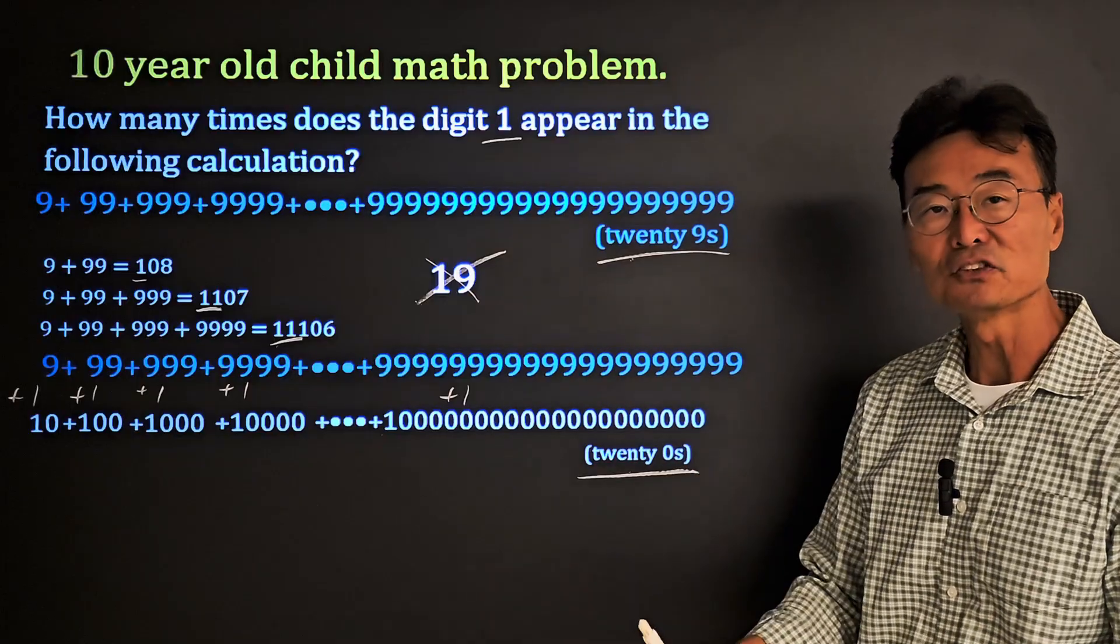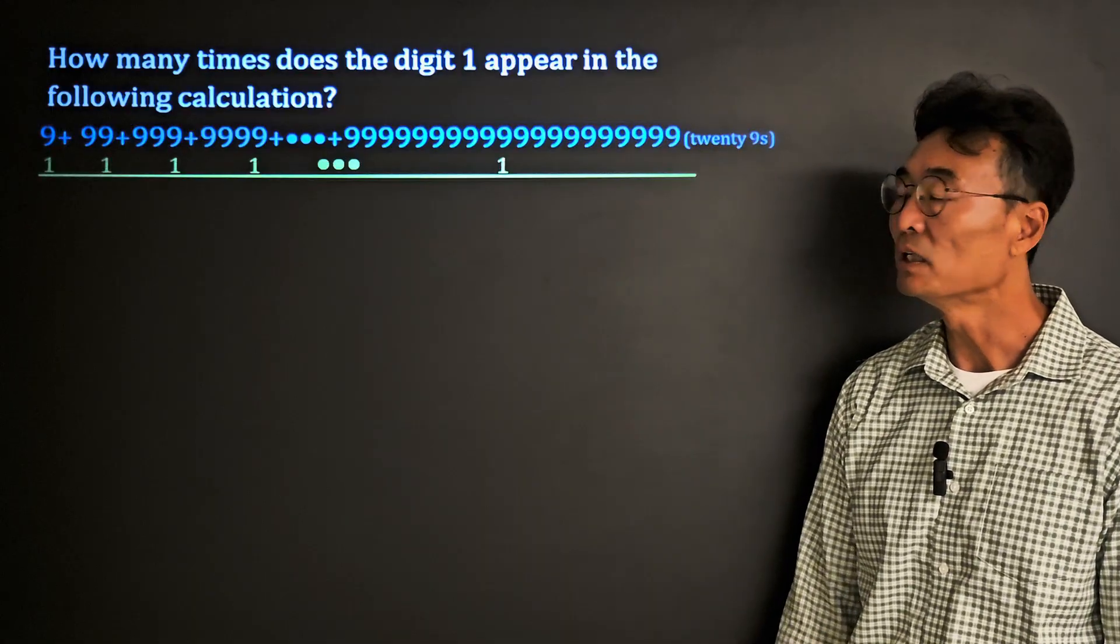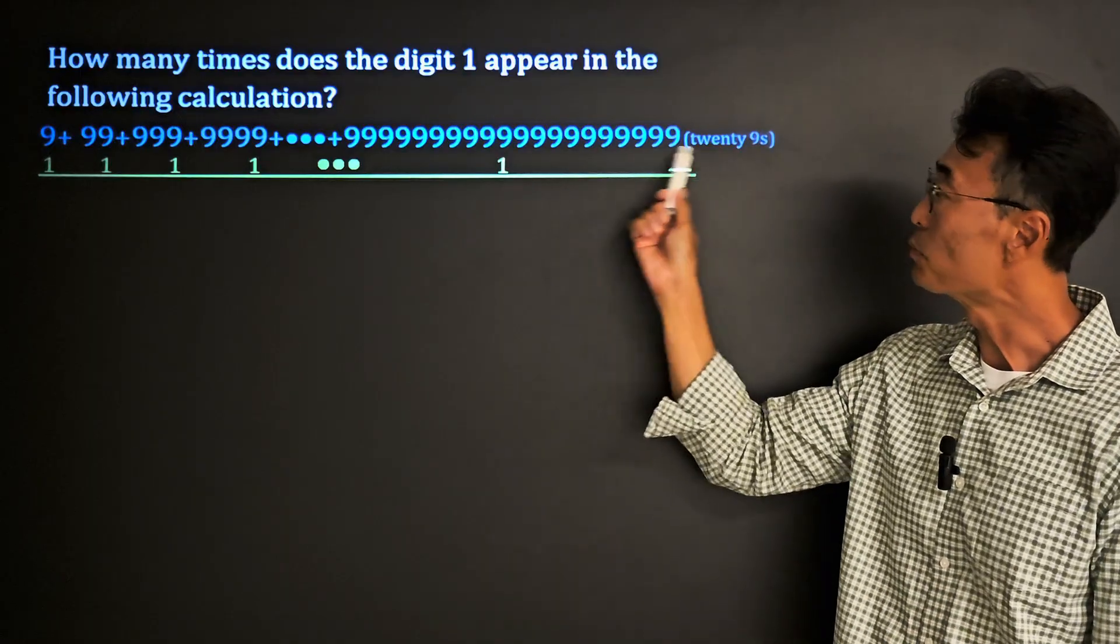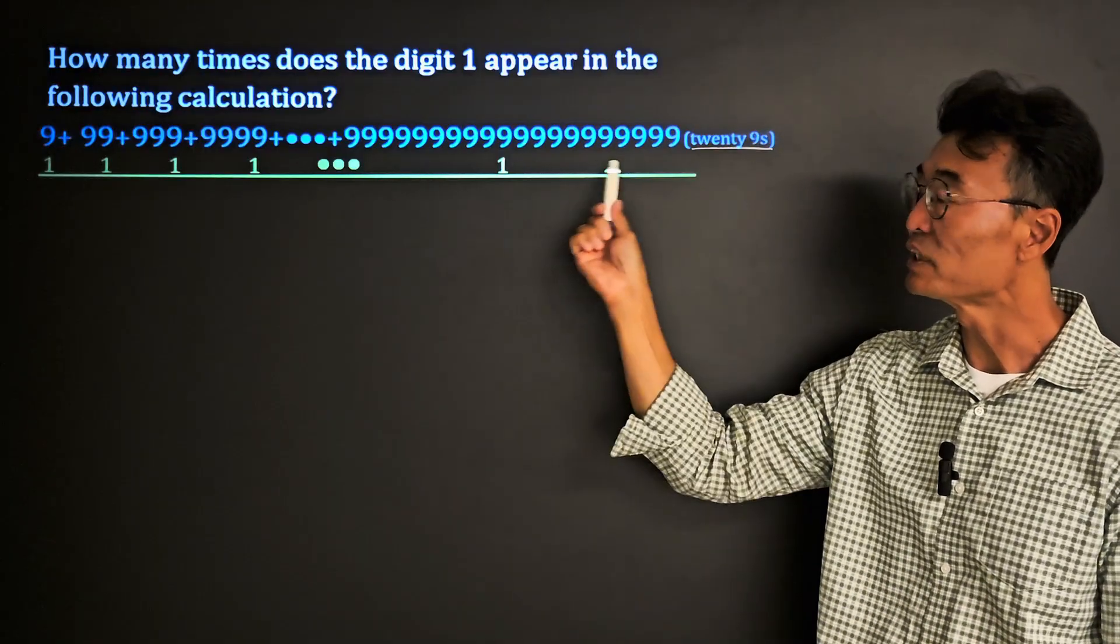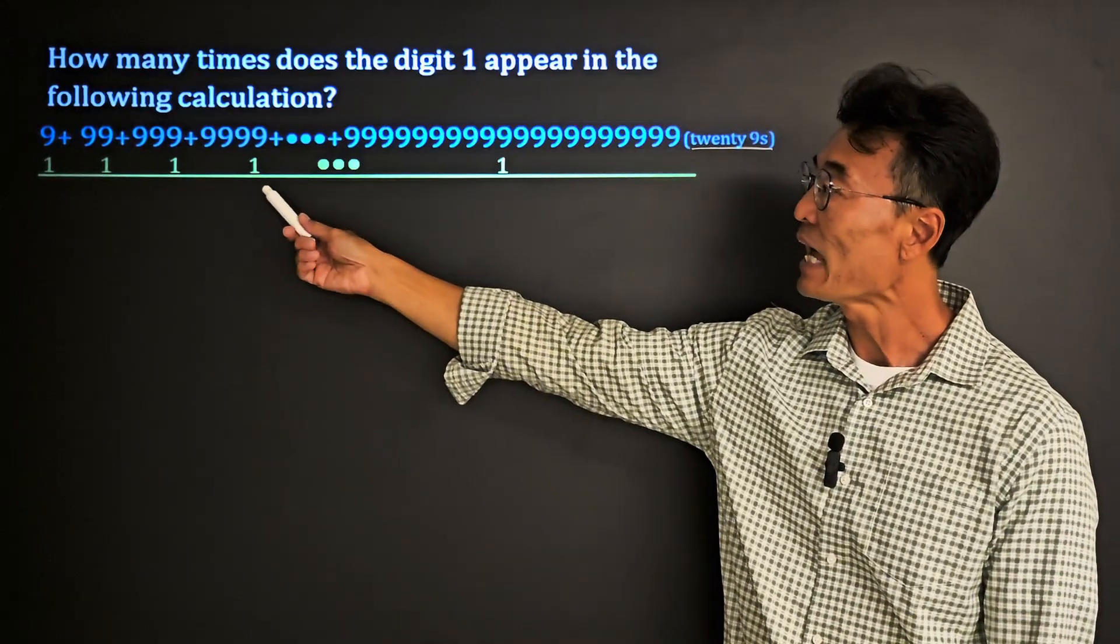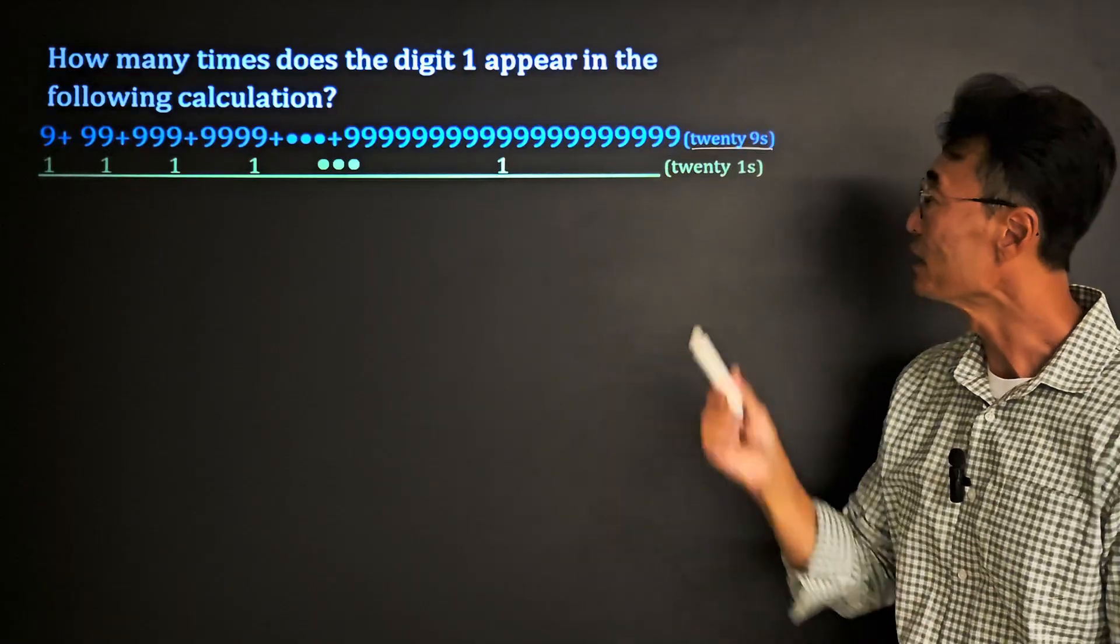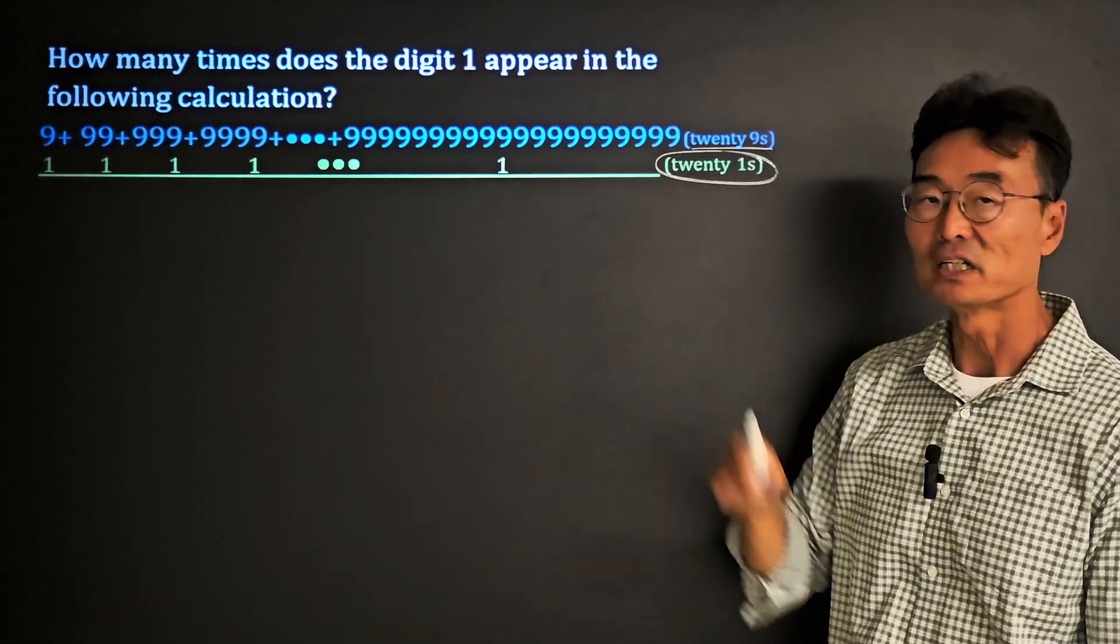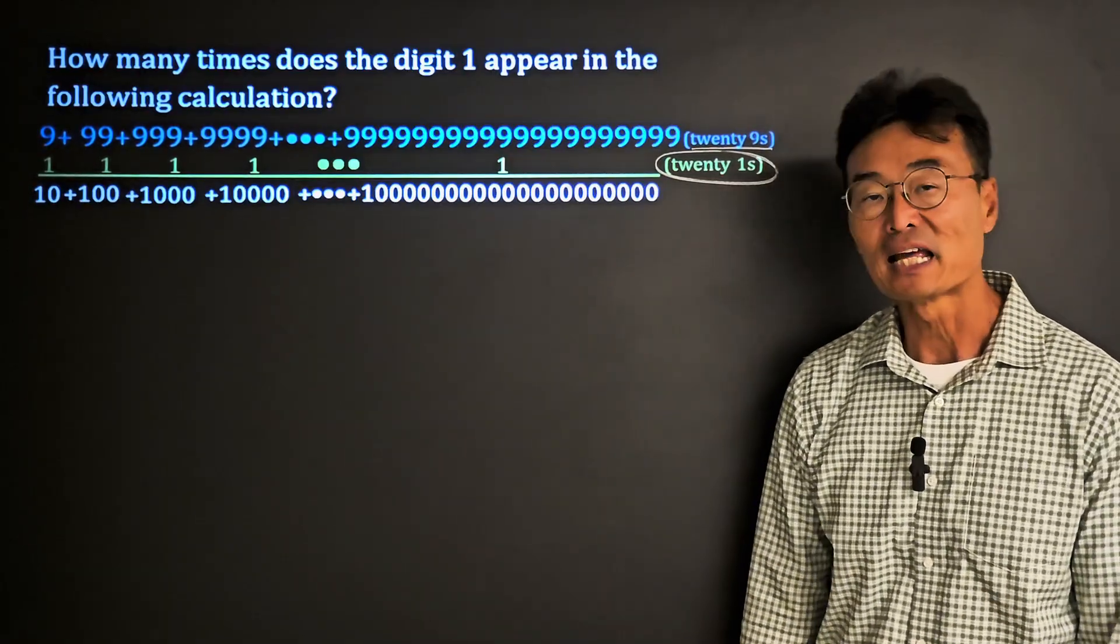We started by adding 1 to each and every one of the numbers. Remember the very last number had 29 nines, which means we have 20 numbers in the problem. Again, that means we have added 1 twenty times. So let's keep that in mind: we have added 1 to each and every number, or 20 of them. And if I add up and down we ended up getting this.